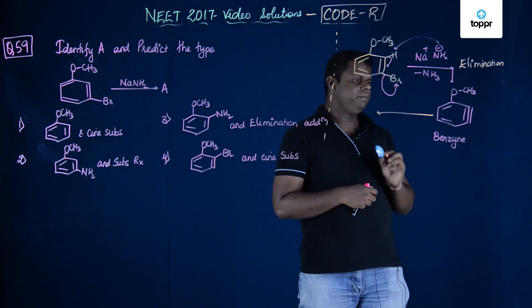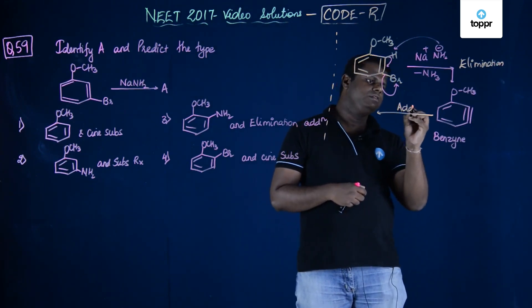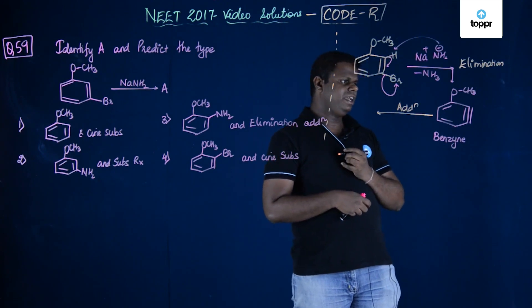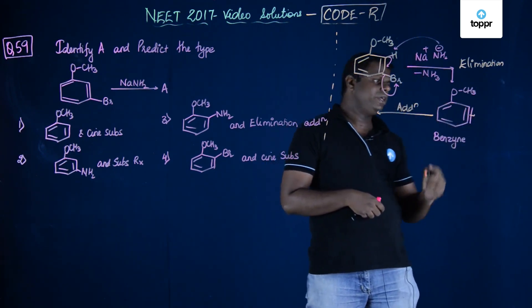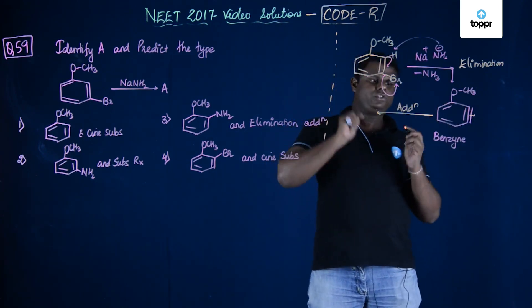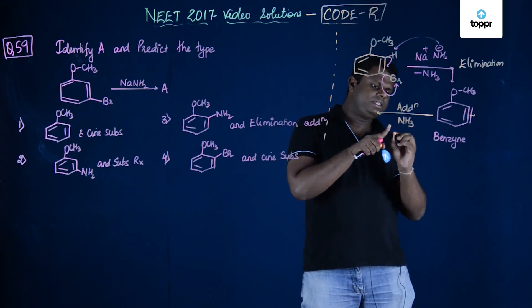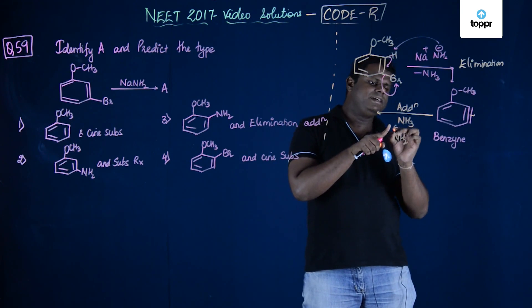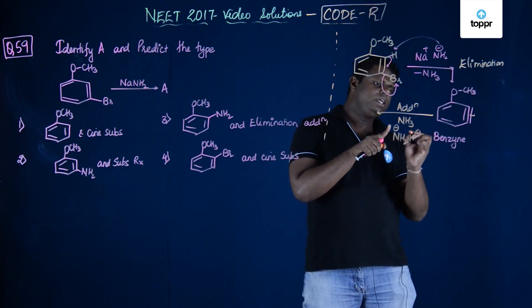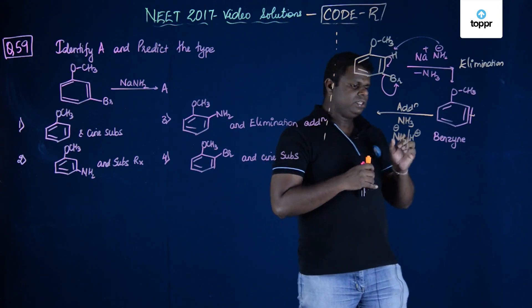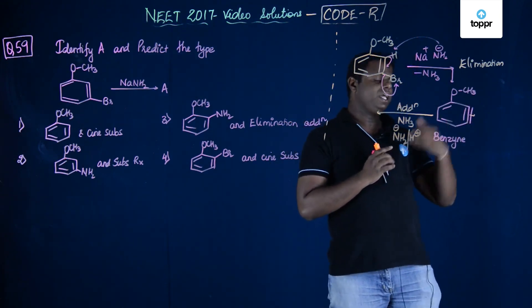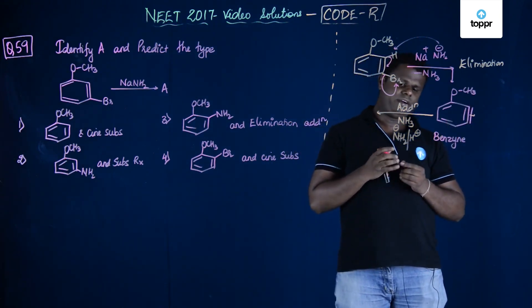Now, this benzyne intermediate undergoes addition. In addition what exactly happens? The bond breaks. Now, the question is whether NH2, addition of NH3 that's going to happen - NH3 is basically NH2- and NH+. If you could see here what exactly you could conclude in this case? NH2 and H both have to add and attack somewhere, right?